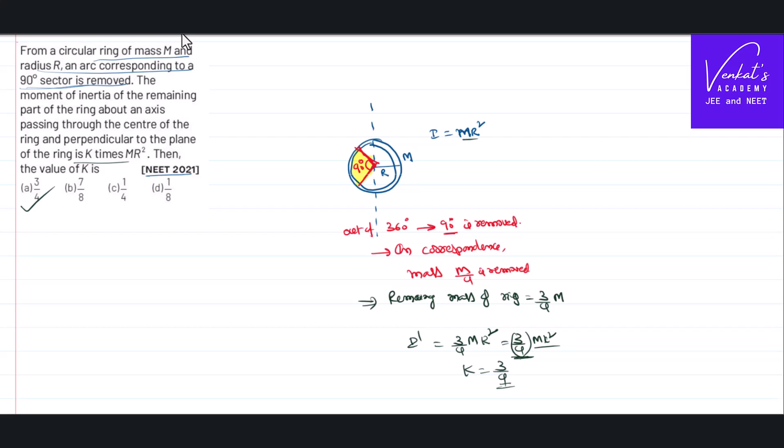That's how we have to solve the problem. It's a simple problem. Only thing that you need to know is moment of inertia formula MR square, and 90 degree corresponds to 1 by 4th of the mass. If you know these two things, you can simply come to this answer. That's how we solve the problem. Thank you for watching.